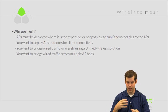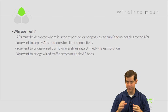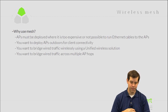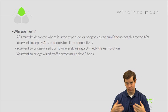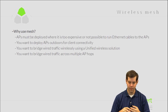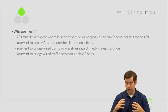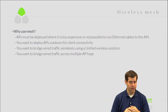If you want to deploy APs outdoors for client connectivity, that usually stems from it being too hard to run cables, so outdoors is a very classic case for mesh — especially once you get away from buildings. Third, if you want to bridge wired traffic wirelessly using a unified solution as opposed to autonomous APs, mesh is your solution, since there's no other mode that can bridge wired traffic in a unified platform. And fourth, bridging wired traffic across multiple AP hops — if you have to go hop to hop to hop, you can't really do that in the autonomous world, so mesh becomes your only real option.